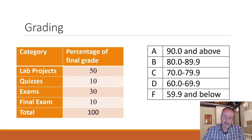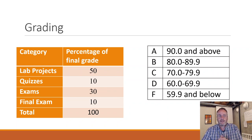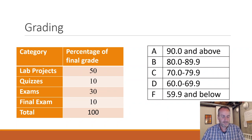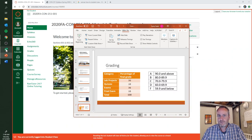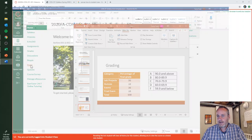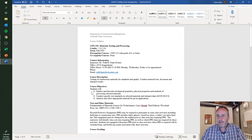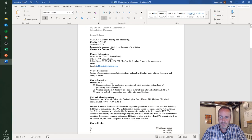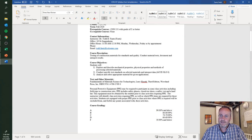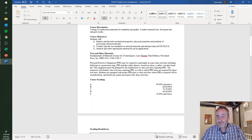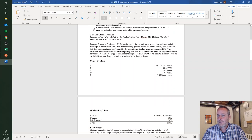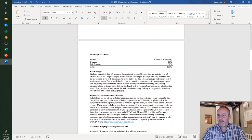The weekly quizzes are only 10% of your grade and shouldn't be overly challenging. There are three exams and a final exam, each worth 10%, and the final is cumulative but equally weighted with the others. The grading criteria is standard — no plus or minus system in this department, just A, B, C, D, F. I'll have the full syllabus uploaded to Canvas with contact information, course objectives, textbook info, and grading.